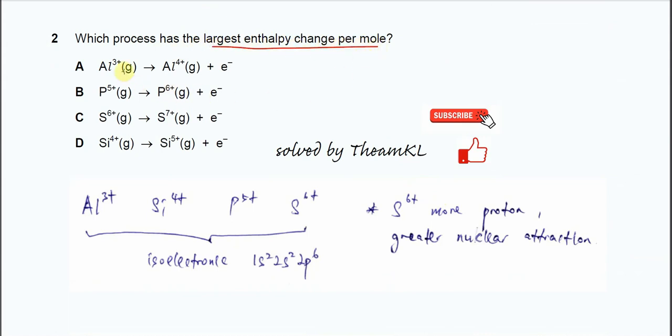So you need to know from this answer, or this process. So we know that all these processes, they are ionization. Because all these ions, they tend to remove electrons. So this is ionization.